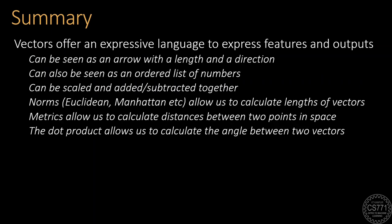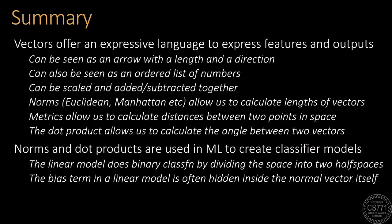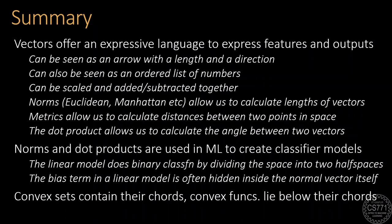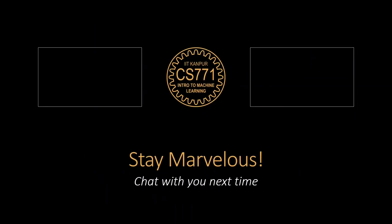So today, we saw that vectors offer a very, very rich language to express features and outputs of machine learning models. They can be seen as an ordered list of numbers or as an object in a vector space with a length and a direction. They can be scaled, added, subtracted together. There exist norms that allow us to calculate the lengths of these vectors. There are metrics that allow us to calculate distances between two points. And the dot product allows us to calculate the angle between two vectors. We also saw that norms and dot products are very widely used in machine learning to create classifier models. Finally, we were introduced to the concept of convex sets and convex functions, which we will explore more in future discussions. So this is a good place to stop for today. Stay marvelous and I will chat with you next time.